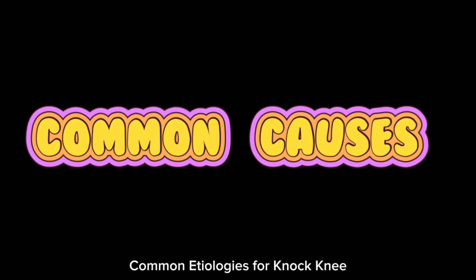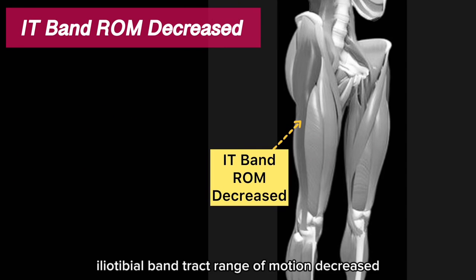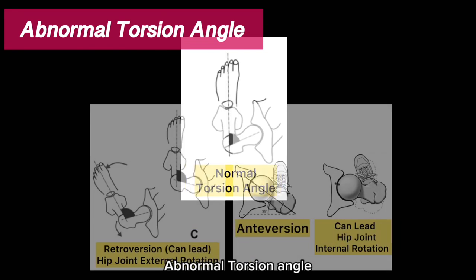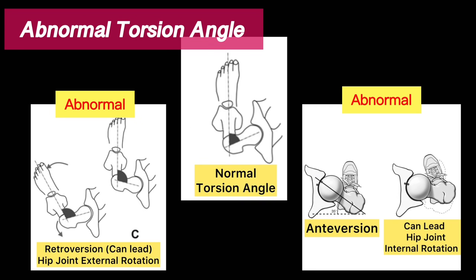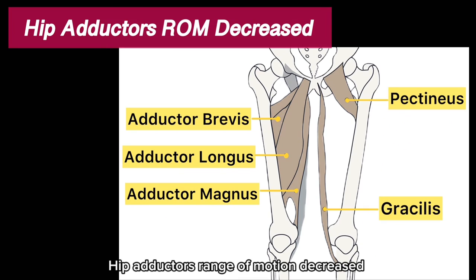Common knee etiologies for knock knee: iliotibial band tract range of motion decreased, abnormal Q angle, abnormal torsion angle, weakened hip muscles, hip adductors range of motion decreased.